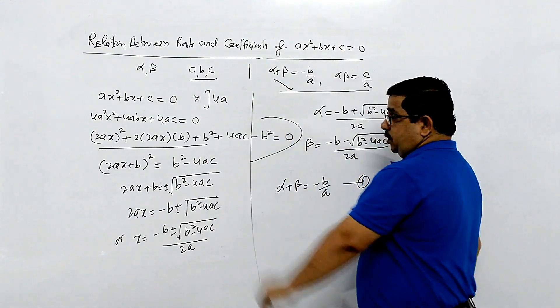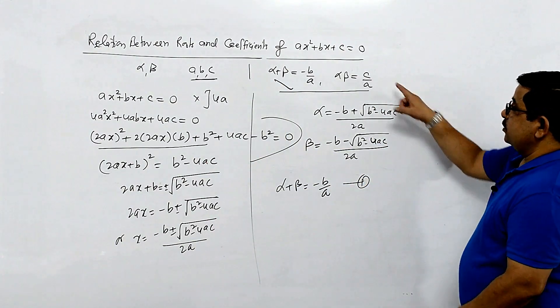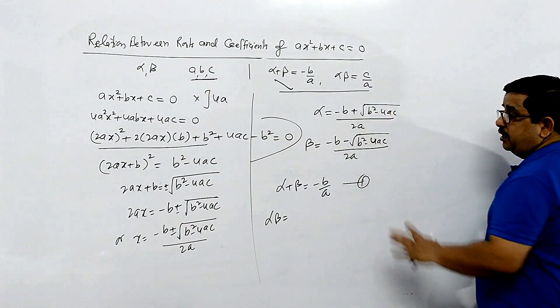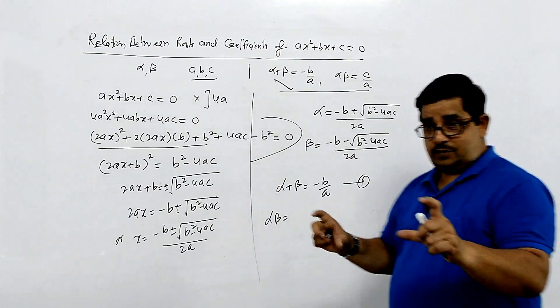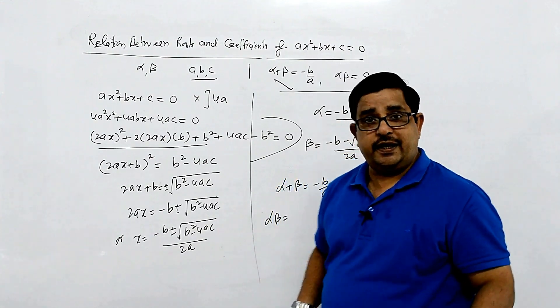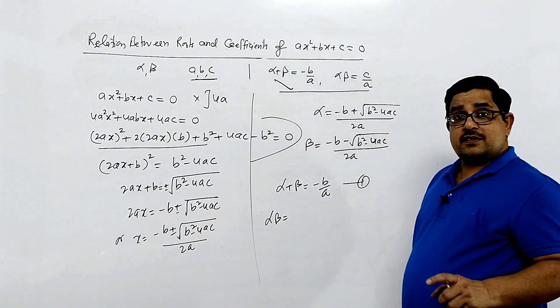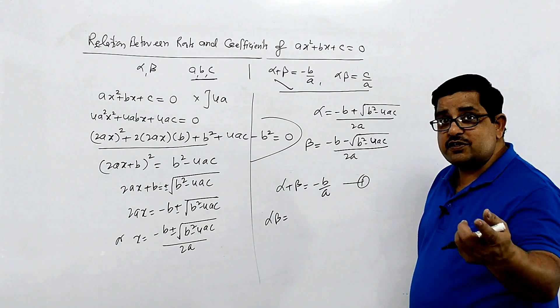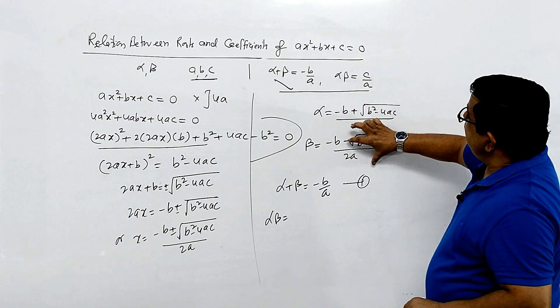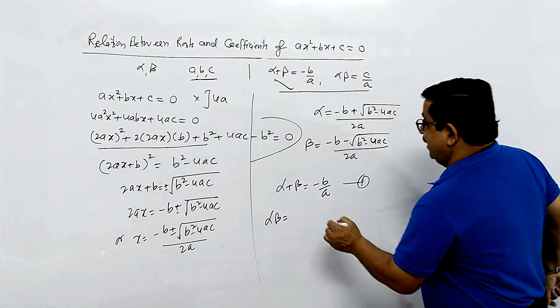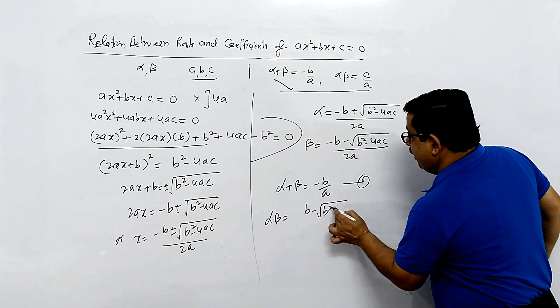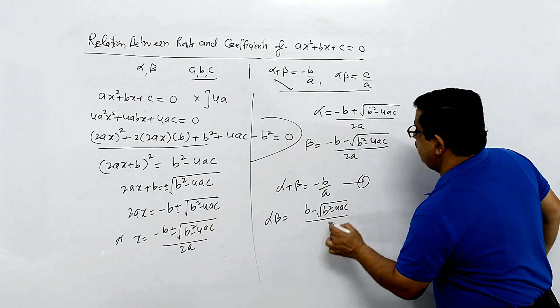Now we will find the product of the roots. Taking the product of alpha and beta, we multiply the two root values together. When we multiply, the result is c by a.